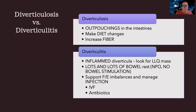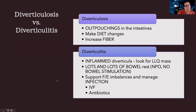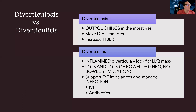For diverticulitis, I want their bowels to not be doing anything — NPO, nothing by mouth, no bowel stimulation. Any pressure in their bowels or increased abdominal pressure could lead to perforation and peritonitis. I want to support fluid and electrolyte balance and manage infection with IV fluids and antibiotics. Sometimes it can be managed at home, but most of the time it's managed in the hospital with IV fluids, NPO, and sometimes an NG tube — just letting their bowel rest. Think of this like exacerbations and remissions: diverticulosis means get things moving; diverticulitis means no movement at all.